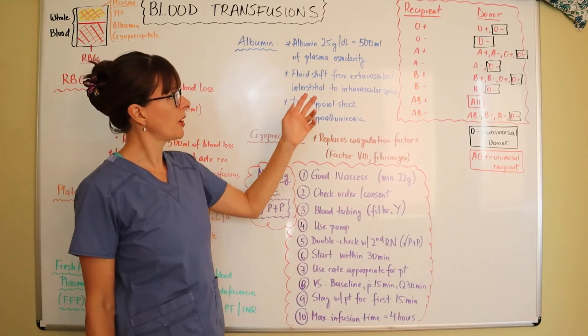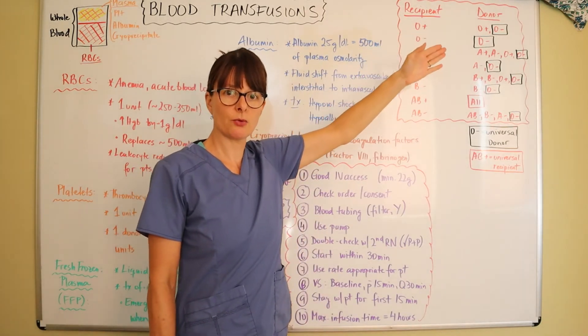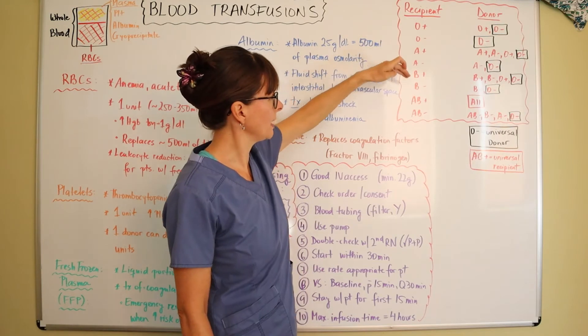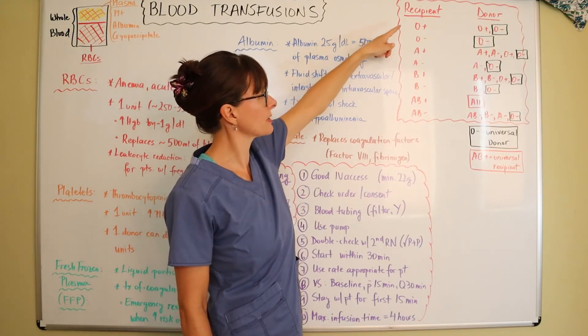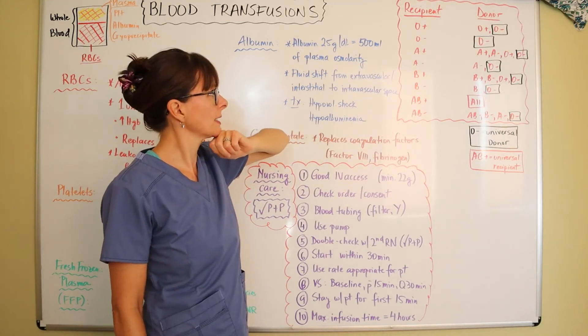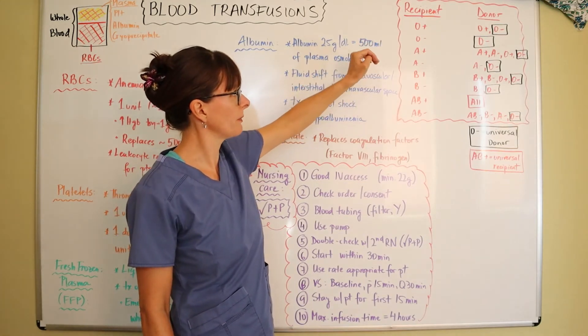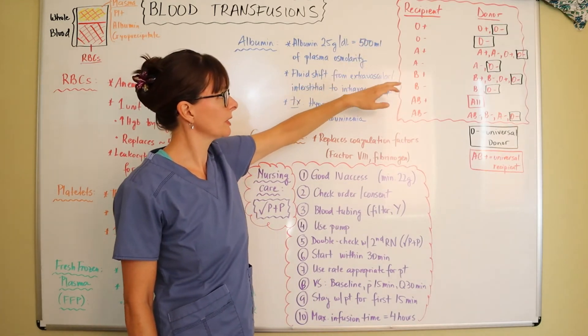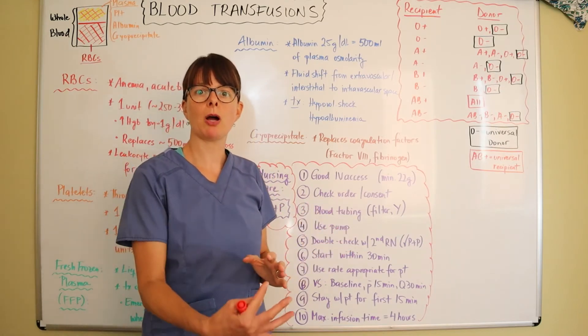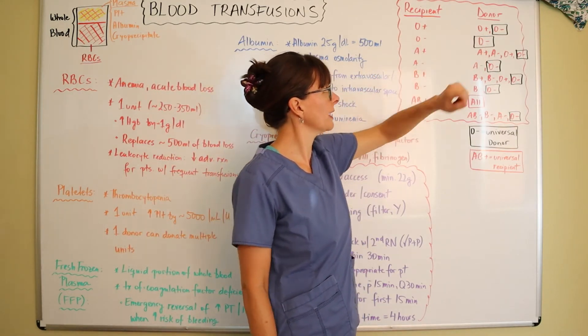The other thing I've drawn out are recipients and donors. What recipient can receive blood from what donor? It goes from O, A, B, and AB blood types. Then we always have positive and negative RH factors. Any letter can receive blood from their own letter. But remember that we cannot give a patient who is RH negative an RH positive blood product. So O positive can receive O positive and O negative, but a patient who has O negative blood type can only receive O negative.